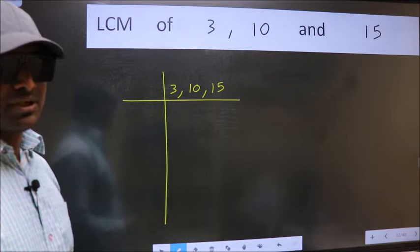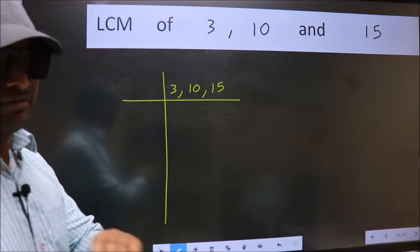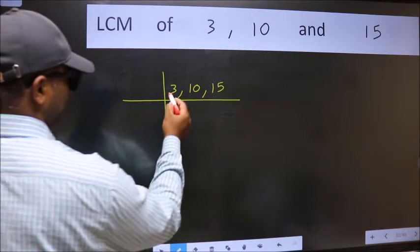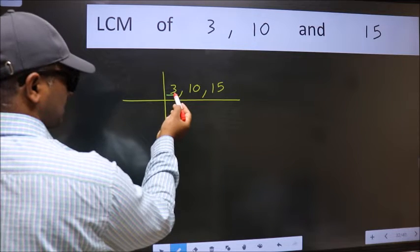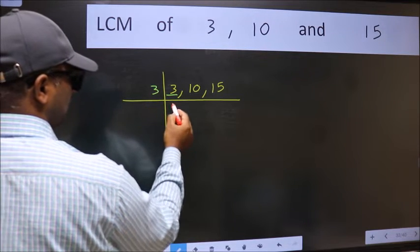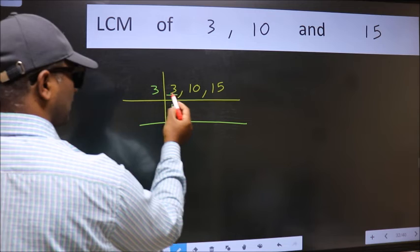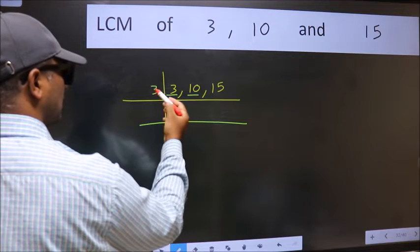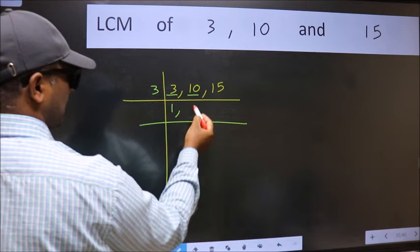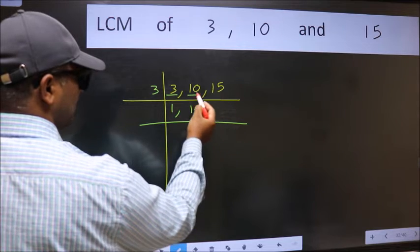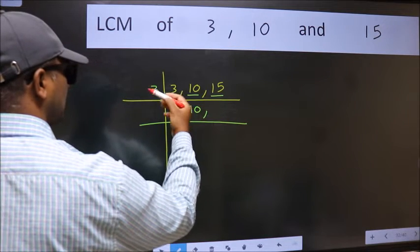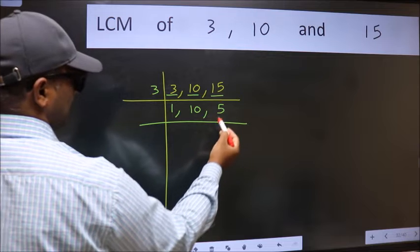Now we should focus on the first number which is 3 here. 3 is a prime number so 3 goes into 3. The other number 10 is not divisible by 3 so we write it down as it is. The other number 15. When do we get 15 in the 3 table? 3 times 5 is 15.